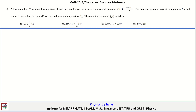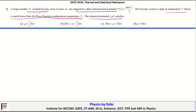Let's take a look at the next problem. A large number N of ideal bosons, each of mass M, are trapped in a three-dimensional potential given by V(r) = ½mω²r². The bosonic system is kept at temperature T much lower than the Bose-Einstein condensation temperature T_c. The chemical potential satisfies which relationship? Let's try to understand this problem.